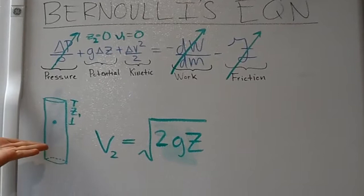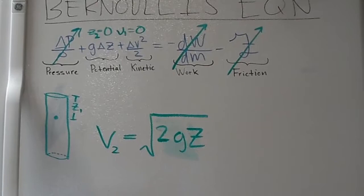After making all of these assumptions, we also have a handy diagram here to help you visualize this. We can solve for velocity as the square root of 2gz.